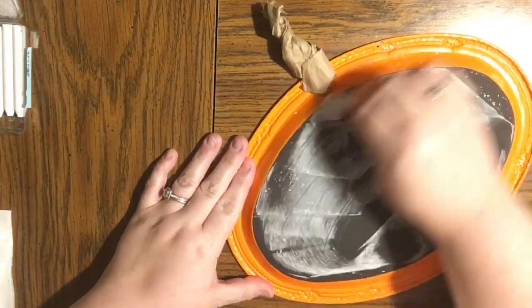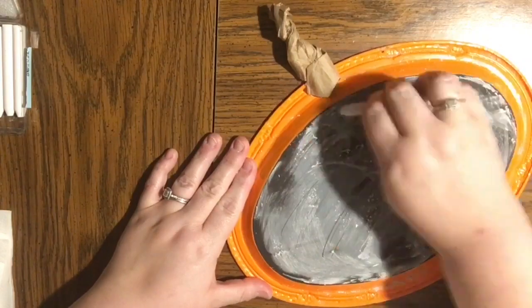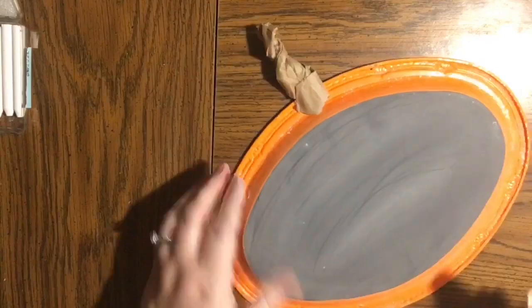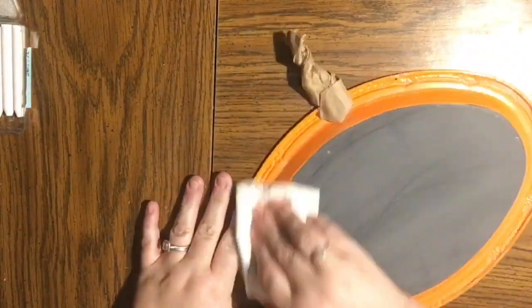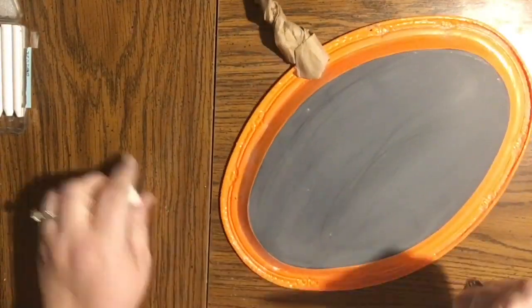So this is just one coat of flat black spray paint on the back of this pumpkin tray and I just love the way that looks. It takes away the newness of spray paint.